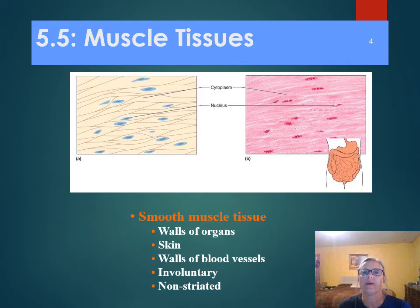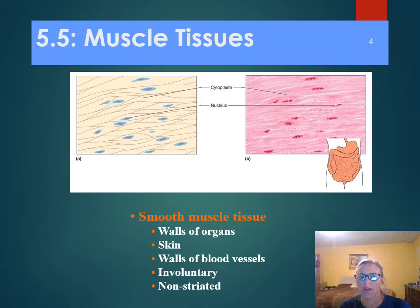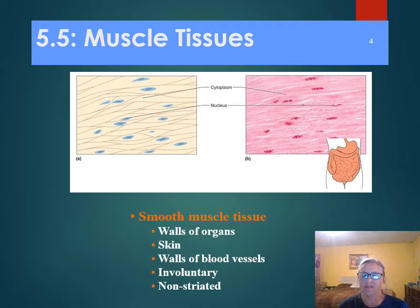We call smooth muscle involuntary. Smooth muscles move food through the digestive system. They also constrict blood vessels and help to empty the urinary bladder. Think about those areas and how this structure relates to the function of these.